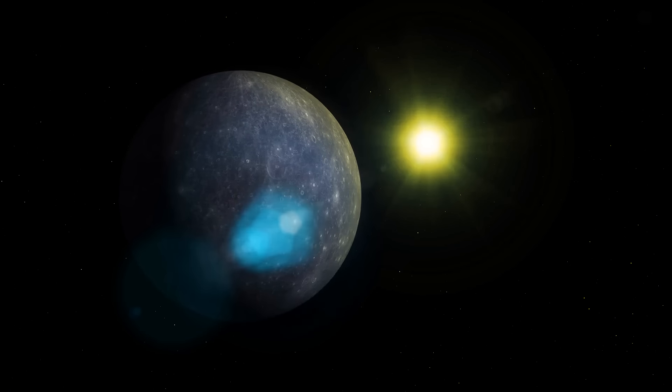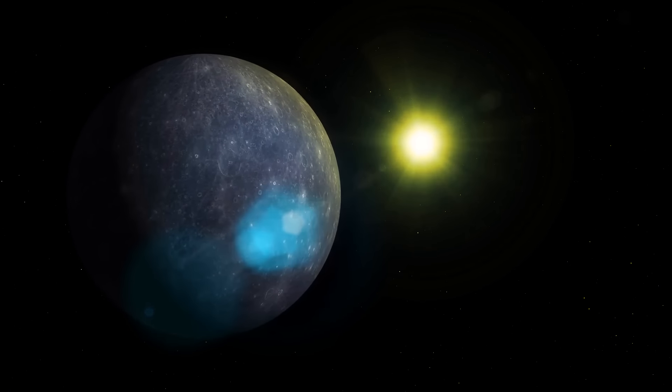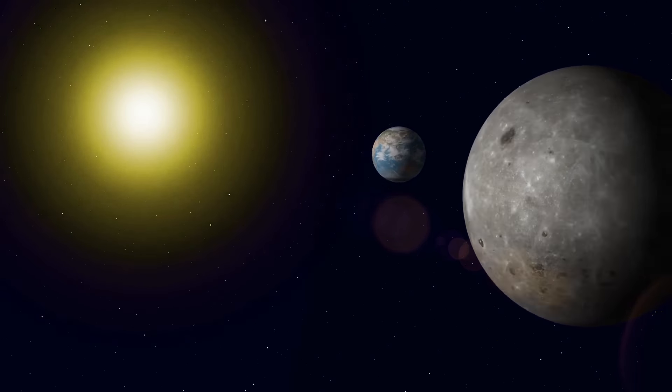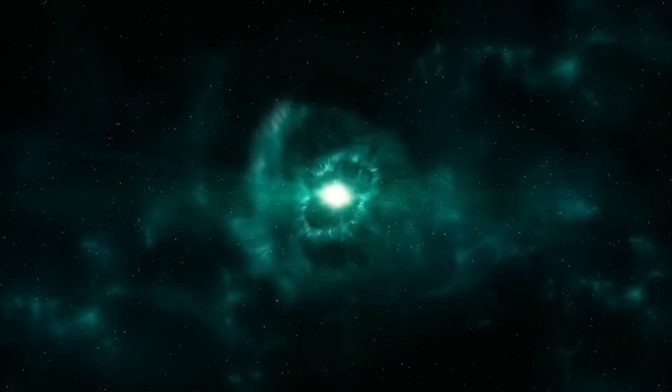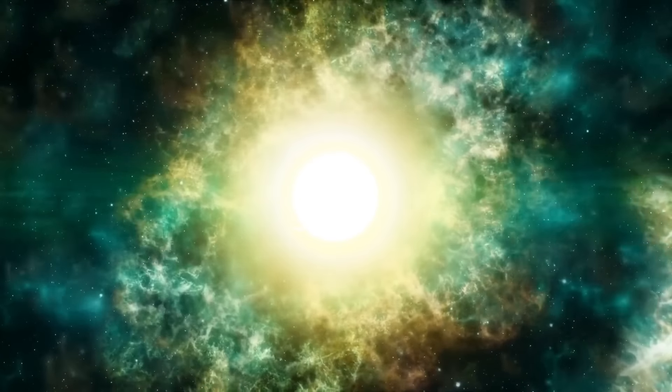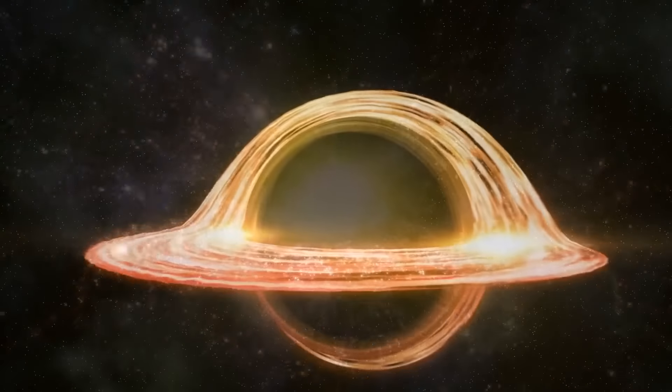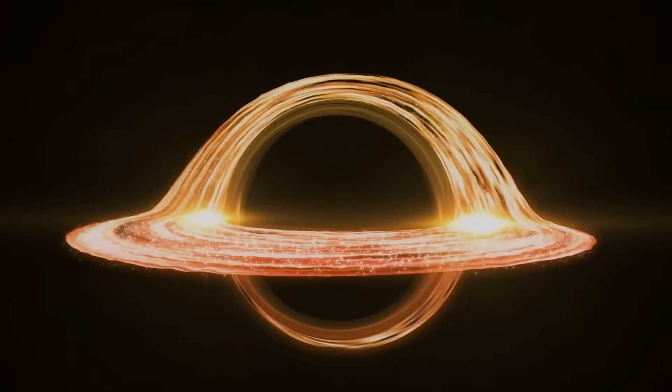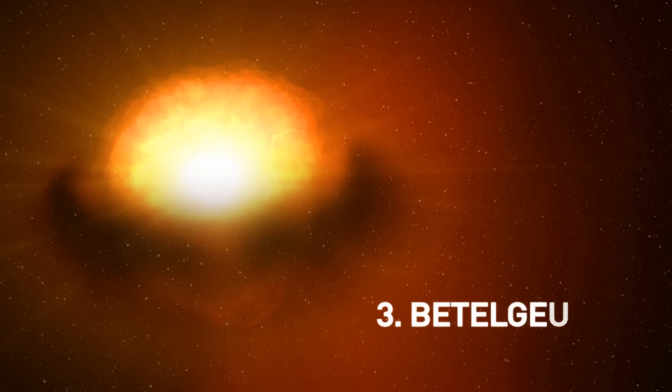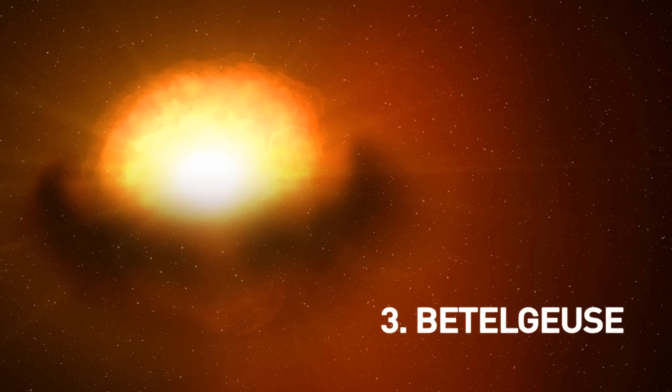Iron is just a few steps above titanium in the periodic table. And when iron forms, fusion stops and a star collapses. Rho Cass is really close. Or, more correctly, was really close. Because the eruption we saw in the year 2000 really happened 10,000 years before. Many astronomers think Rho Cass has already gone hypernova, formed a black hole, and doesn't even exist anymore.